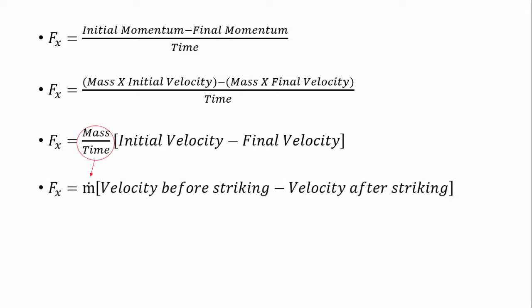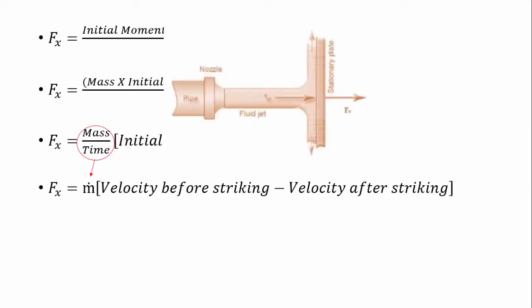At this point, we must think of the initial and final velocity of the jet along direction x. We assume that the initial velocity along the direction is v. And what about the jet velocity after striking?